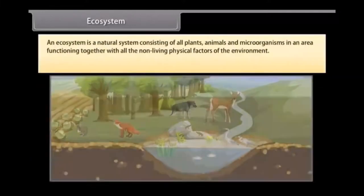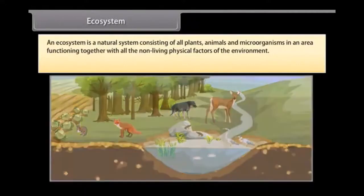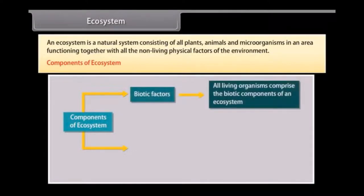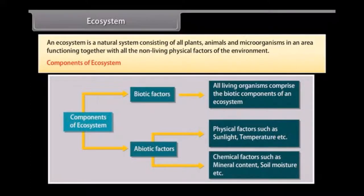An ecosystem is a natural system consisting of all plants, animals and microorganisms in an area functioning together with all the non-living physical factors of the environment. Components of ecosystem: Ecosystem comprises two components. One, biotic factors including all living organisms. Two, abiotic factors that includes physical factors such as sunlight, temperature, chemical factors such as mineral content, soil moisture, etc.